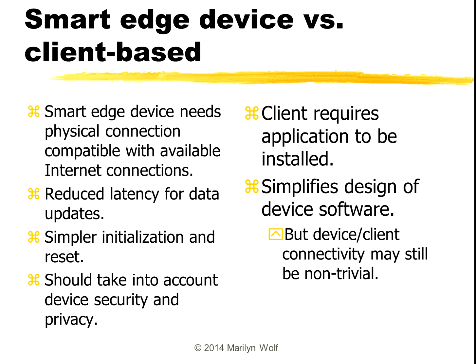Comparing the two options: the smart edge device needs some sort of physical connection that's internet-capable — it could be ethernet or Wi-Fi — and that may increase the cost and power consumption of our board. Having this direct internet connection means it takes less time to get data up to the cloud or back down, reducing latency. Because we don't have an additional app in the middle, initialization and reset when something goes wrong is easier — we only have to worry about the edge device. However, we need to be careful about security and privacy, because when we put the internet directly on the device, that device can be hacked.